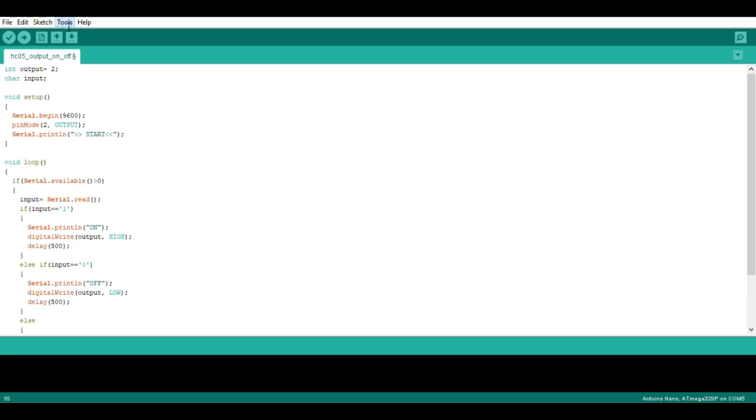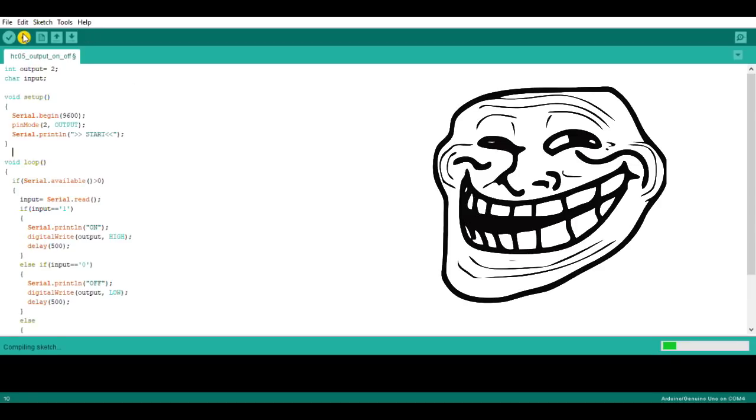And I have used a delay function of half a second so there will be a gap of 500 milliseconds whenever we turn on or off the relay. If you want to add more than one relay, you can just add another output and assign two values for turning it on or off just like the first relay. And this is pretty much it. Now you can copy paste this whole sketch.